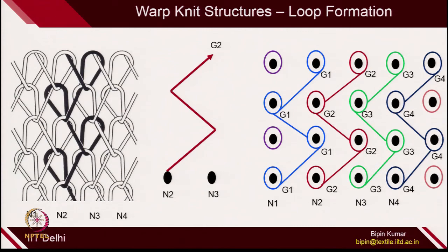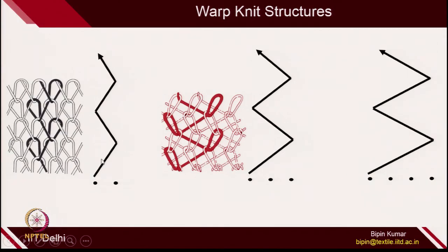For all warp knitted structures, what is most important is to understand the movement of the guide bar. If you understand guide bar movement, the structures become very easy to understand. If the guide bar shifts position to only alternating needles, you create the basic structure. When the guide bar shifts position by 2 pitches — from first to third and back to first — you get a different type of structure where each yarn shifts from the first column to the third column. Guide bar is free to move left or right on the bed, and you can switch up to 4, 5, or 6 needles depending on what type of loops you want to create.